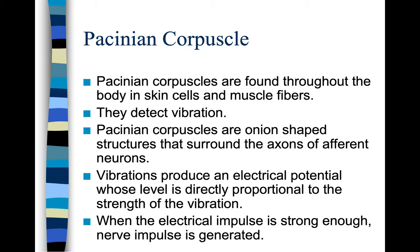Pacinian corpuscles are found throughout the body, in skin cells and muscle fibers. They detect vibration. Pacinian corpuscles are onion-shaped structures that surround the axons of afferent neurons. Vibrations produce an electrical potential whose level is directly proportional to the strength of the vibration. When the electrical impulse is strong enough, a nerve impulse is generated.